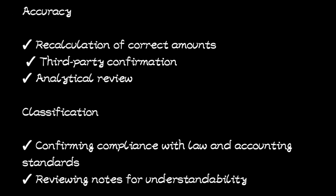There is also accuracy specifically for classes of transactions. For account balances the assertion is called accuracy, valuation, and allocation, but for classes of transactions it is only accuracy — confirming that something is correct. Substantive procedures include: recalculation of correct amounts, use of third-party information, and analytical review.